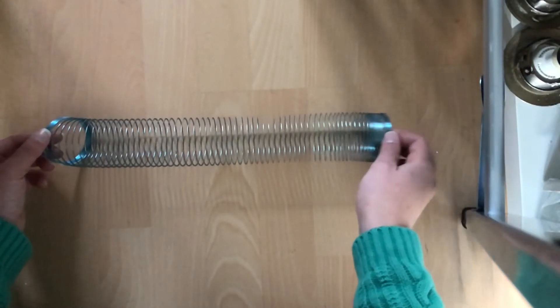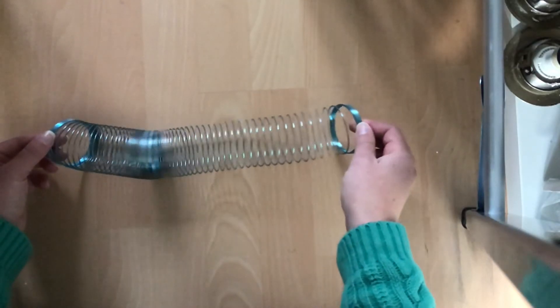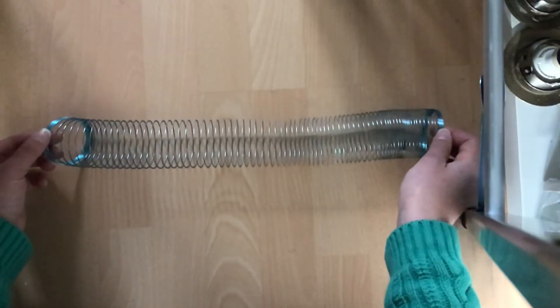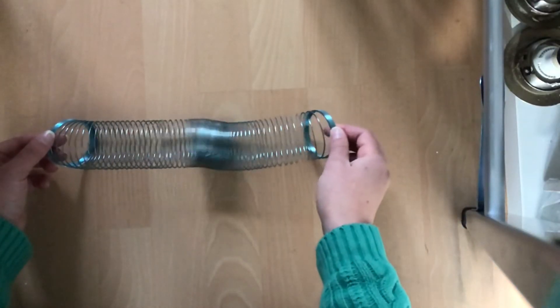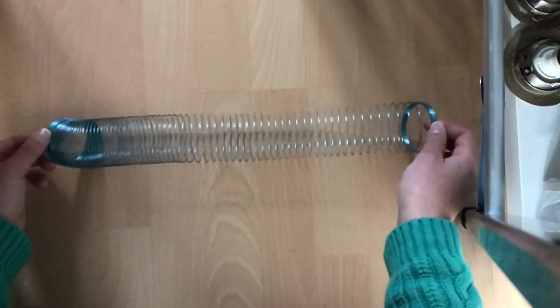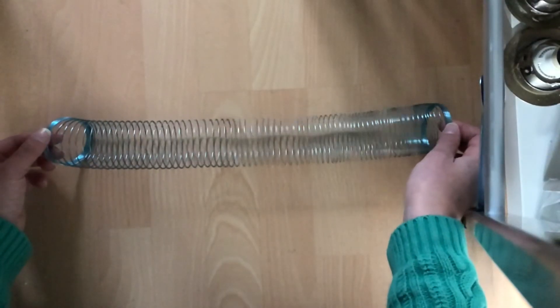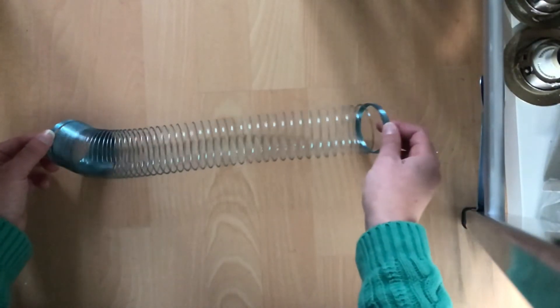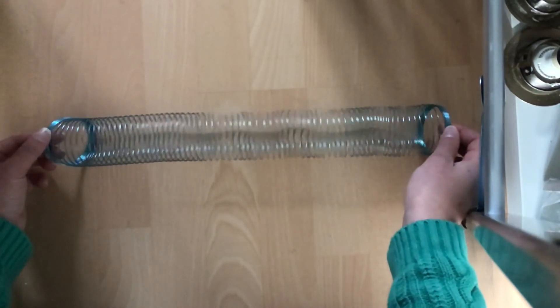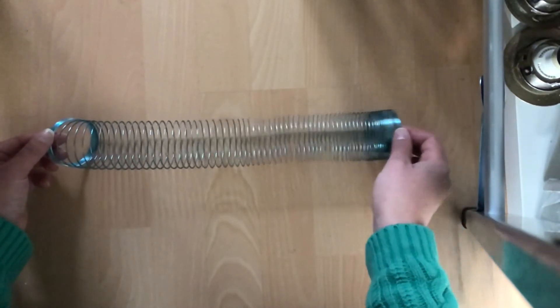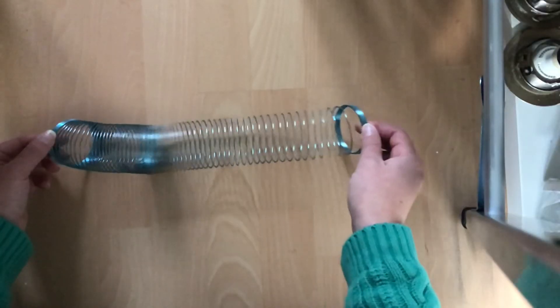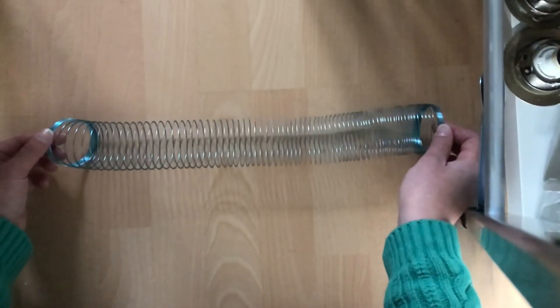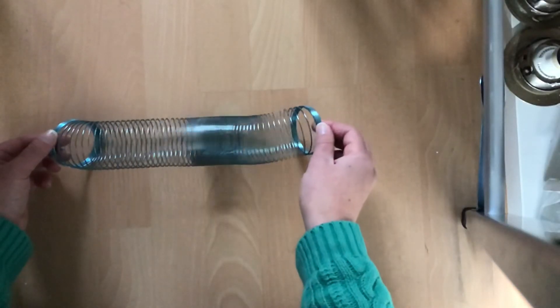For a longitudinal wave you can see that I oscillate the slinky from right to left and the energy is also transferred from right to left. So my oscillations are parallel to the direction of energy transfer. And you can also see clearly the areas of compression and rarefaction as that wave of energy moves along the slinky.